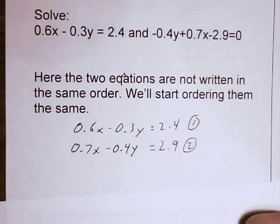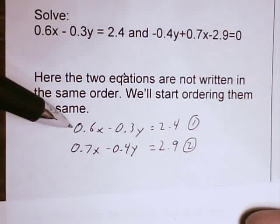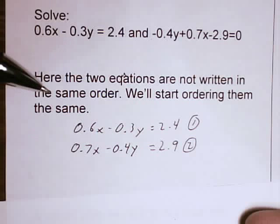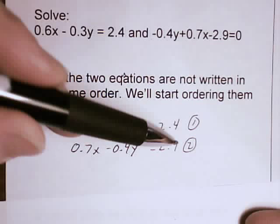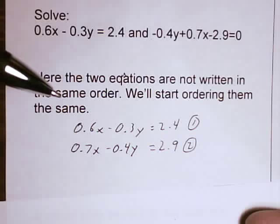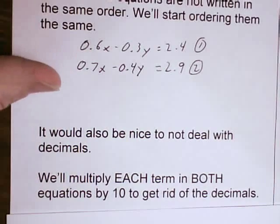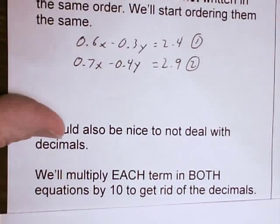These equations are now in the same order and in the same form. But personally, I don't like to deal with decimals. So why don't we get rid of the decimals? If I multiply every term here by 10, it will eliminate decimals from that equation. If I multiply every term here by 10, it will eliminate the decimal from each one. So we're going to multiply each term on both equations by 10.